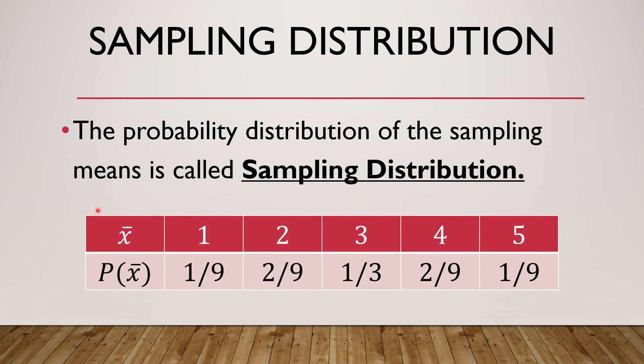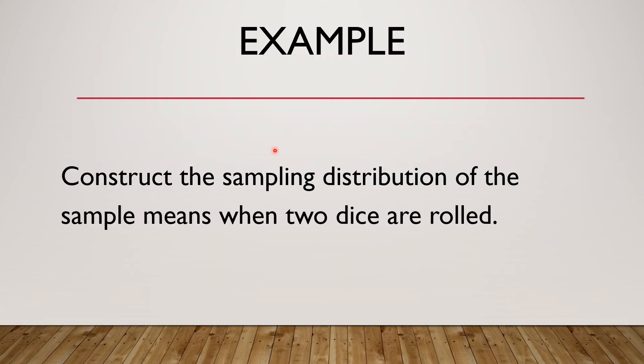And this probability distribution of the sampling mean is called sampling distribution. Sampling distribution is the probability distribution of the sampling mean. So here we are going to construct the sampling distribution.